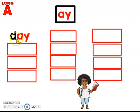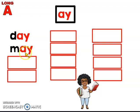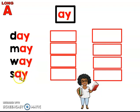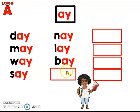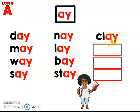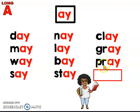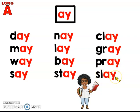Let's keep going. D-A, day. N-A, may. W-A, way. S-A, say. N-A, nay. N-A, lay. B-A, bay. St-A, stay. Cl-A, clay. Gr-A, gray. Sl-A, slay. Awesome. Pat yourself on the back. You did a really good job.